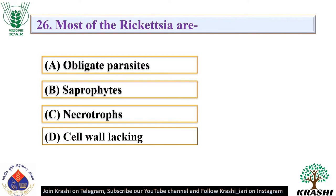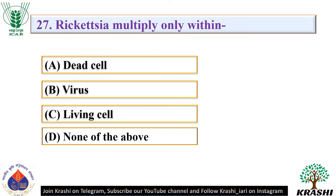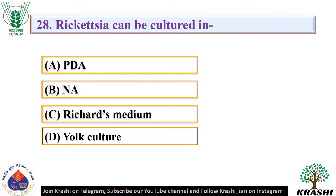Question number 26: Most of the rickettsiae are — they are obligate parasites. Question number 27: Rickettsia multiply only within — they multiply only within a living cell. Question number 28: Rickettsia can be cultured in — they can be cultured in a yolk culture.